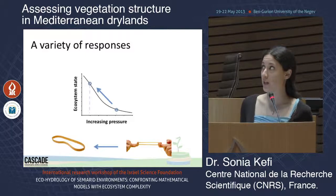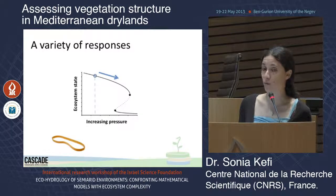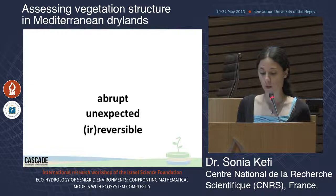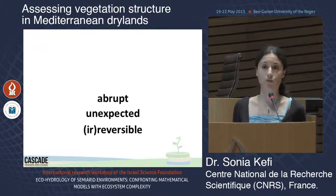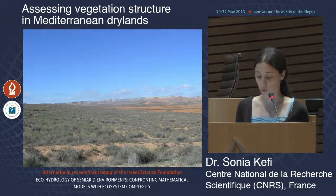Not all ecosystems respond that way. In some cases, ecosystems hardly respond to an increasing pressure until a threshold is reached at which they collapse to a different state. In that case, we talk of abrupt, unexpected response. One of the problems with these types of response is that usually they're very difficult to reverse — it's very difficult to come back to the original state after a shift has occurred.